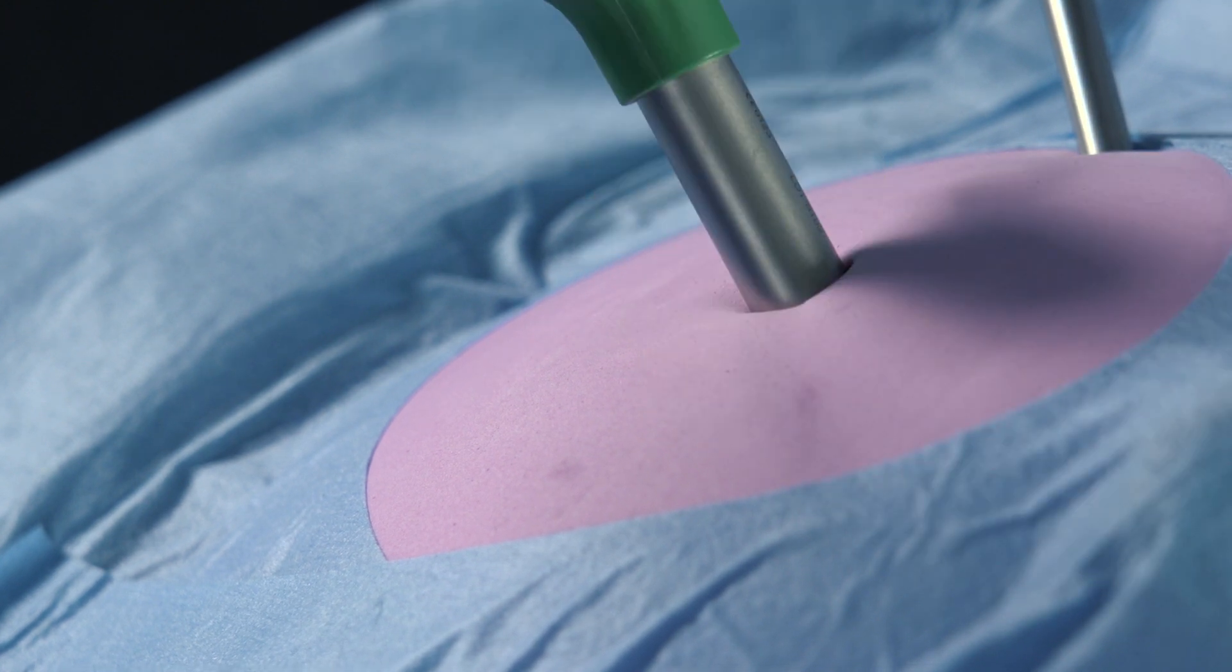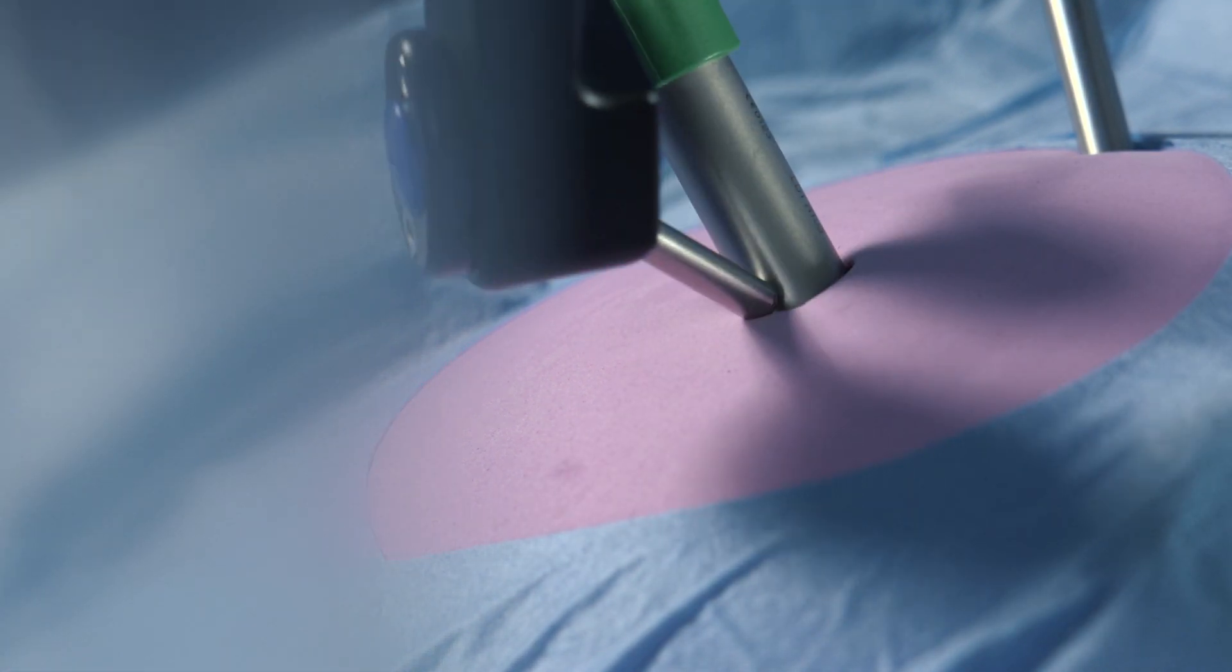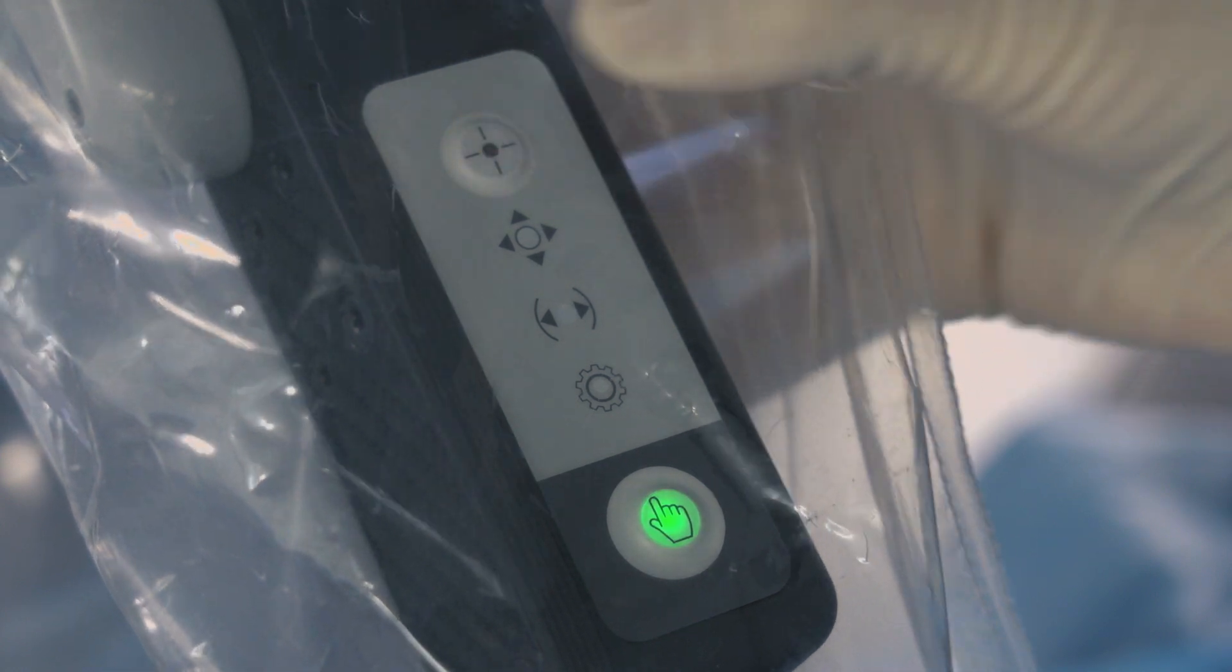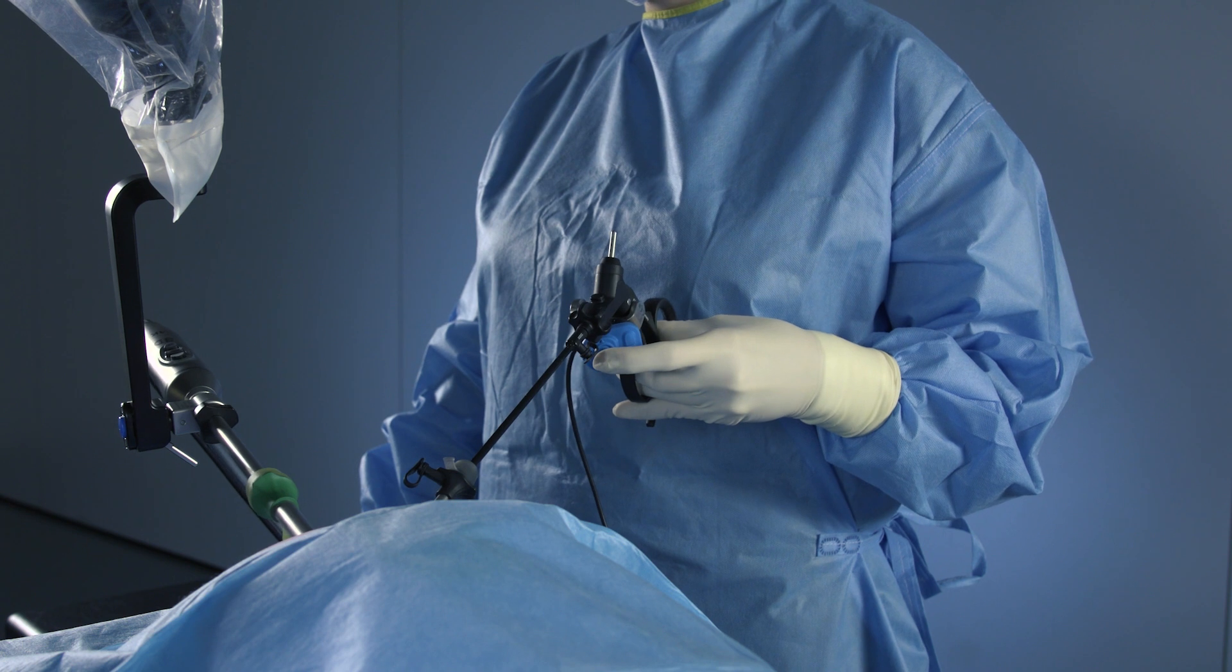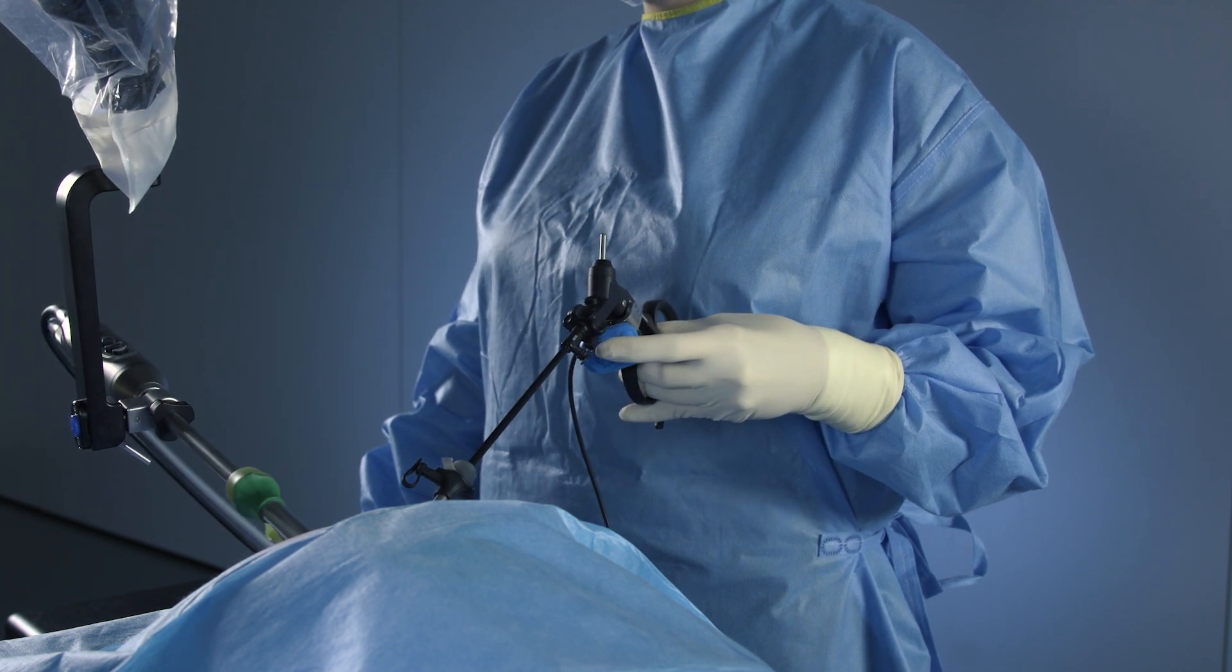If you need to move or change the trocar during your procedure, you must set the new trocar point again. During the procedure, if you need to adjust the position of the universal joint, you will not have to reset the trocar point.